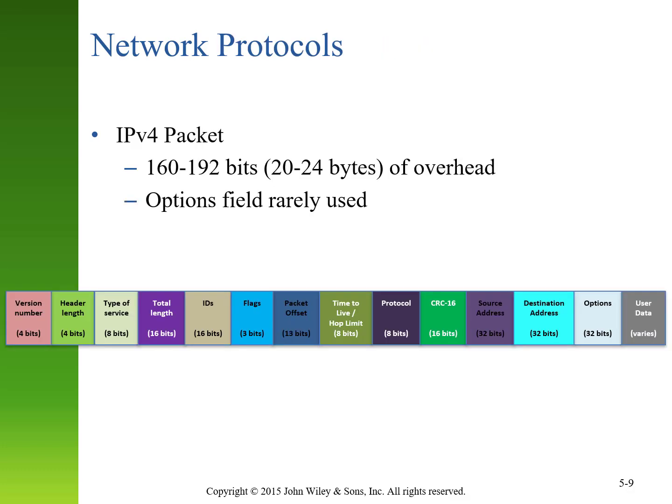The older IPv4 packet has 20 to 24 bytes of overhead, similar to TCP. It includes information about the version, header length, type of service, IDs, flags, protocols, CRC, and both source and destination addresses, as well as a variable user length field.